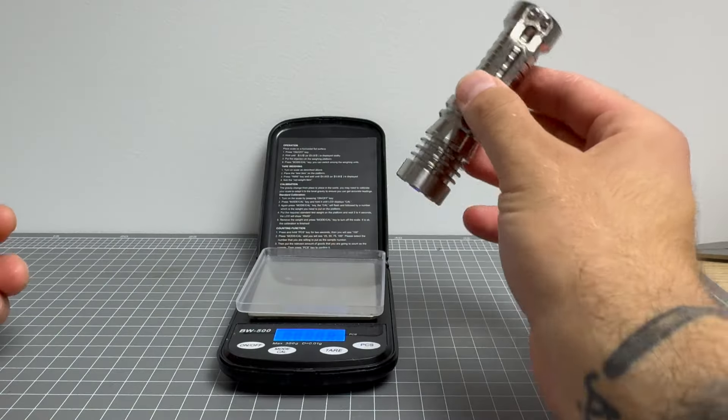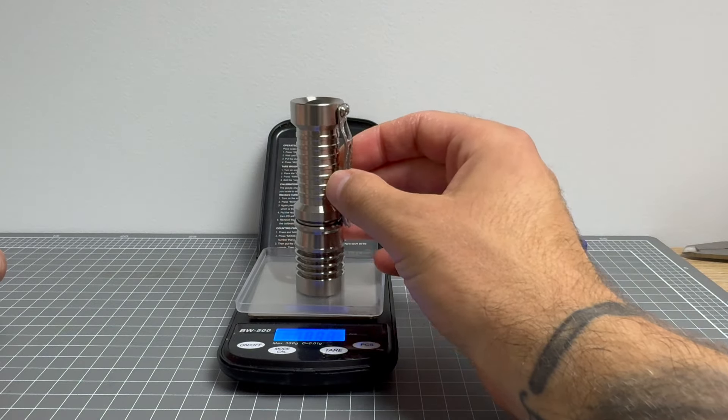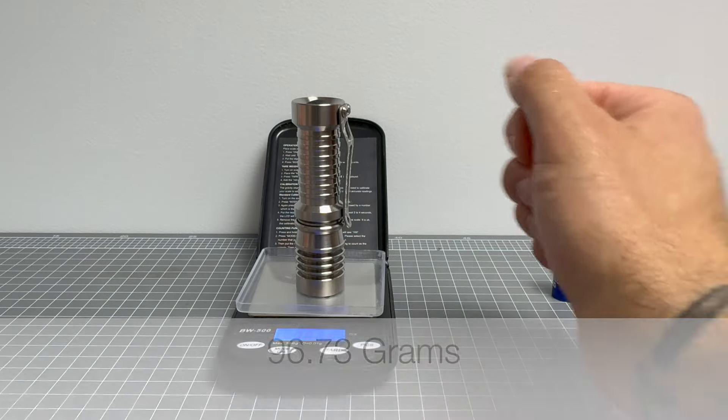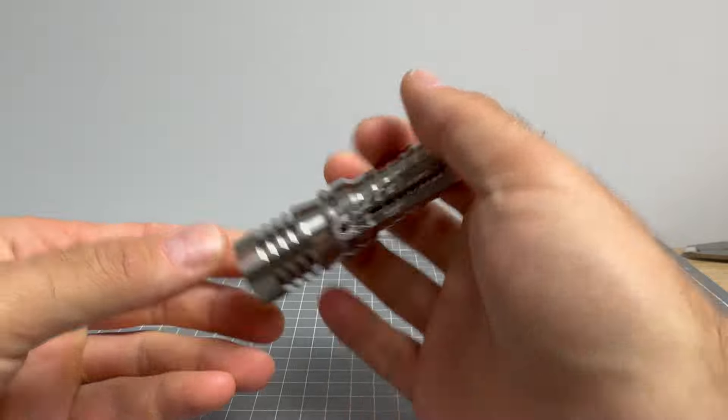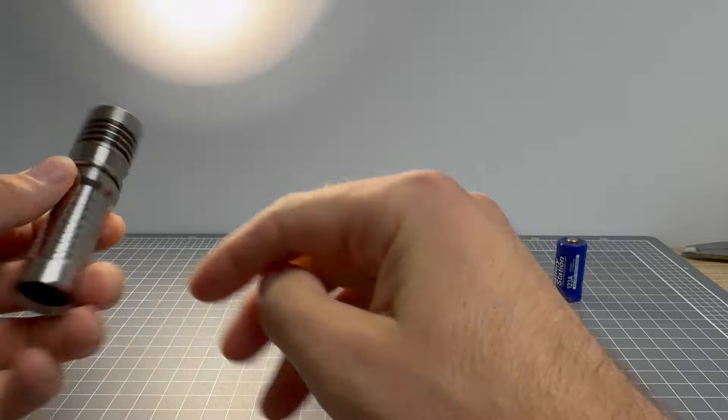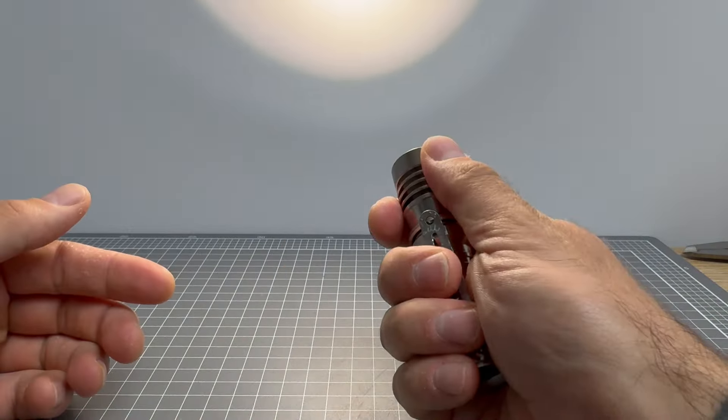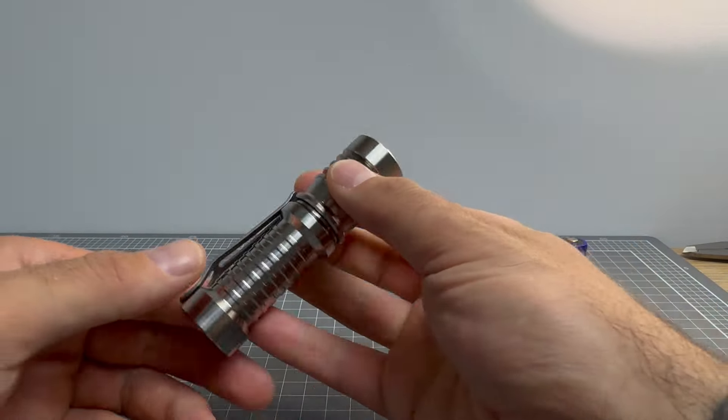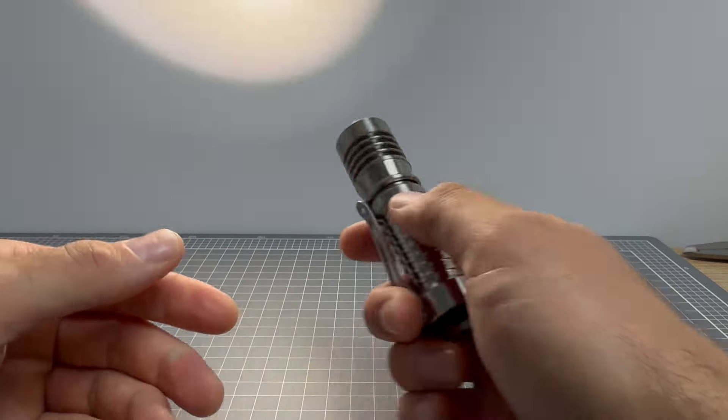God, that pocket clip. Okay. So, I've got the rechargeable 16340 in here, and this light comes in at 96.73 grams. So, it really is just a fantastic, fantastic light. Now, I'm going to get it on the highest output, which is that, and I'm going to just let it run and see if it starts to get hot in the head. And if it does, I'll then take its temperature. But if it doesn't, then I won't.